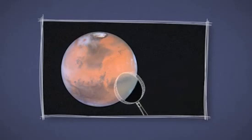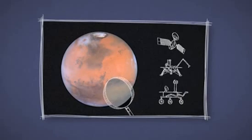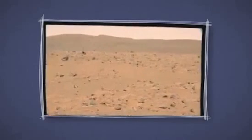But if you get a close-up view with an orbiter, lander, or rover, you'll see that a lot of Mars is actually more of a butterscotch color.